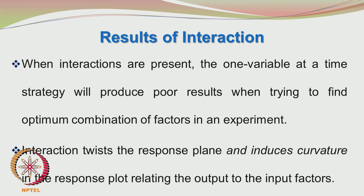When interactions are present, the one-variable-at-a-time strategy will produce poor results when trying to find the optimum combination of factors. Interaction twists the response plane and induces curvature in the response plot. If you have interaction between factors, the simple strategy of one variable at a time experimentation will fail to find the true optimum conditions. You have to resort to design of experiments to identify interaction effects and find the optimum combination accurately. Otherwise, you will be suboptimal, leading to loss in time, production, energy, money, and labor.